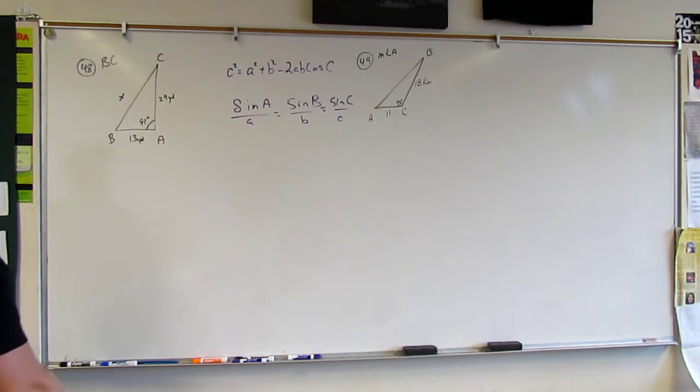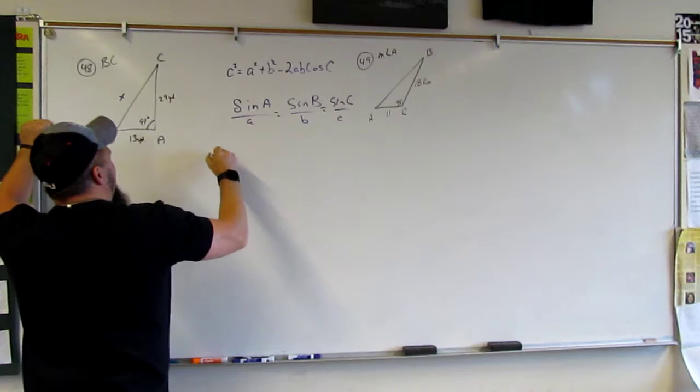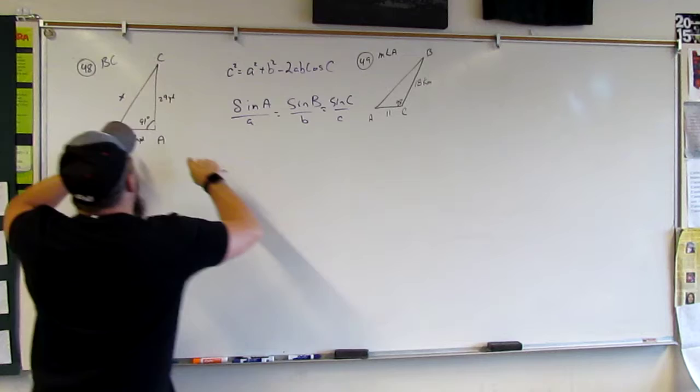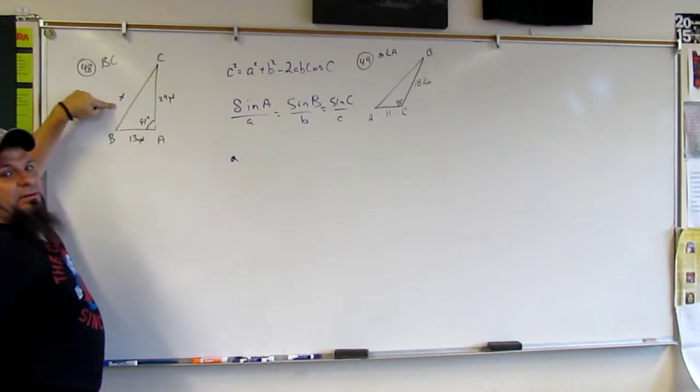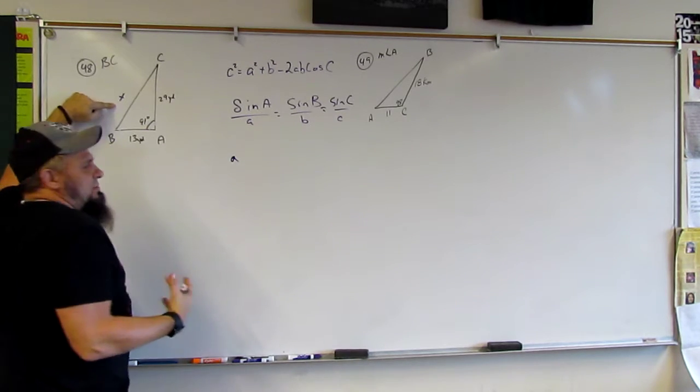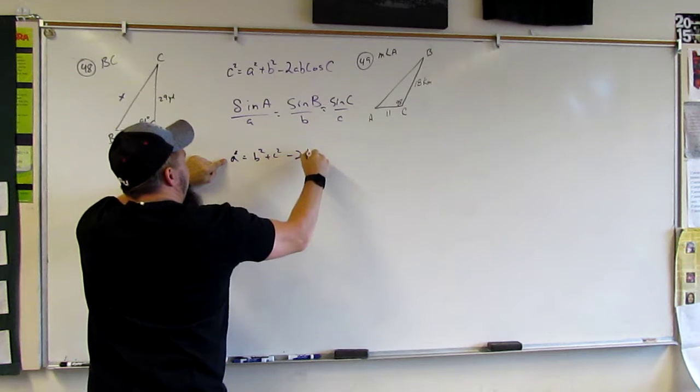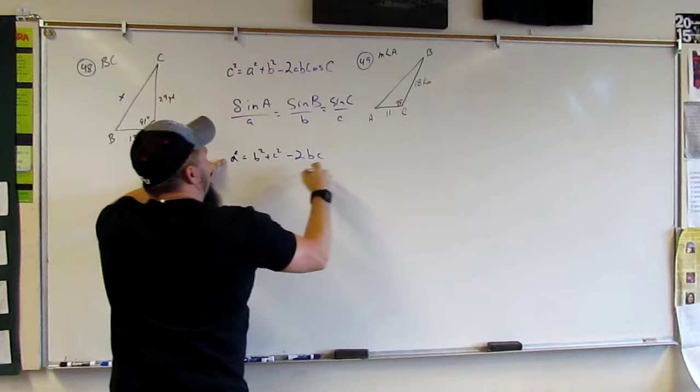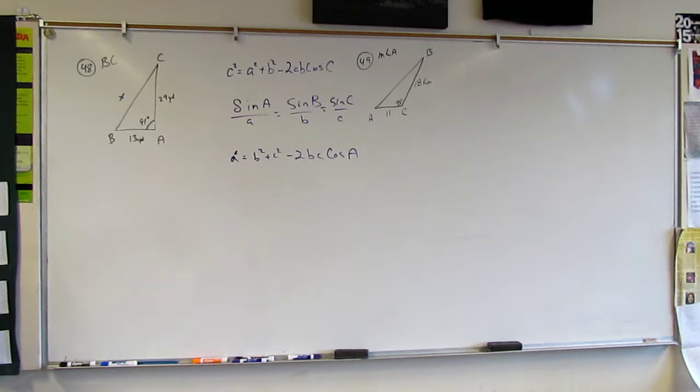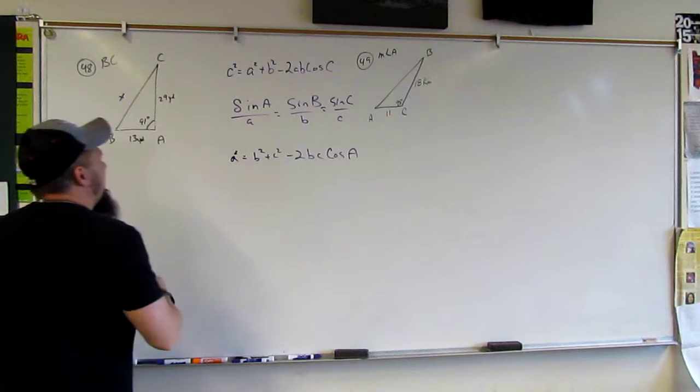So, with this, I would say C, and in this case, I'm going to rewrite this law of cosines. Since we're looking for little A, right, I'm going to write it in terms of A, but remember, it's the same thing. It's just A squared is equal to B squared plus C squared minus 2BC cosine A. So, I can just rewrite it so that it is in terms of this A, B, and C triangle.